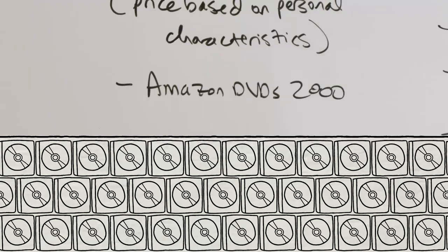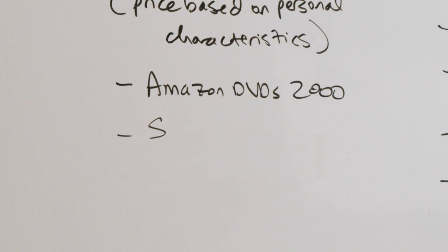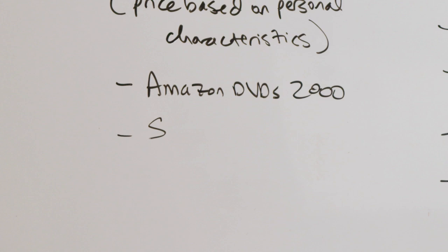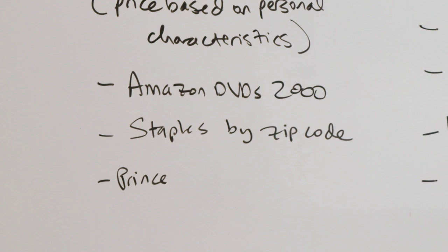In 2000, Amazon was varying the prices of DVDs. Same shoppers, same time of day, but they would see a different price on the DVD. That's happened again with Staples. They have a website that was found to offer different prices based on the zip code of where you were shopping from.